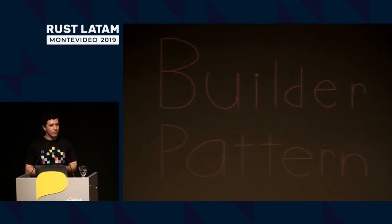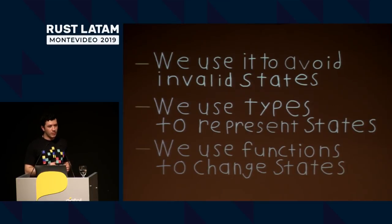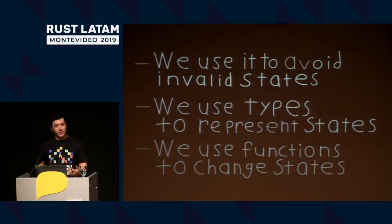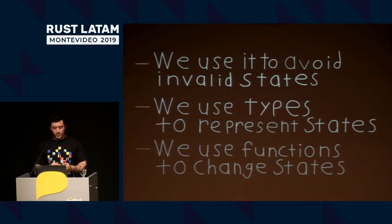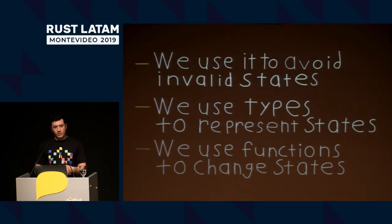The builder pattern is probably one of my favorite things in Rust — you'll see it used extensively in a lot of places. We want to use it to avoid invalid states. Someone using your library has a defined pathway so they cannot do things that would cause the program to take input that compiles and runs but doesn't work as expected — basically a logic bug or a runtime error. We use types to represent states and functions to change between them. If this sounds like a graph, it is.